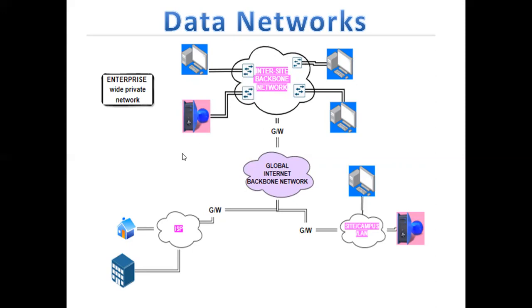These three networks — the home/small business, the single-site, and the enterprise — are all connected to the global internet. As mentioned, the internet is used for communication in data networks. It can transfer multiple types of data and supports multimedia communication, transporting audio files, video files, text files, and images. These networks are connected with the help of a gateway or router, which routes packets to their destination.